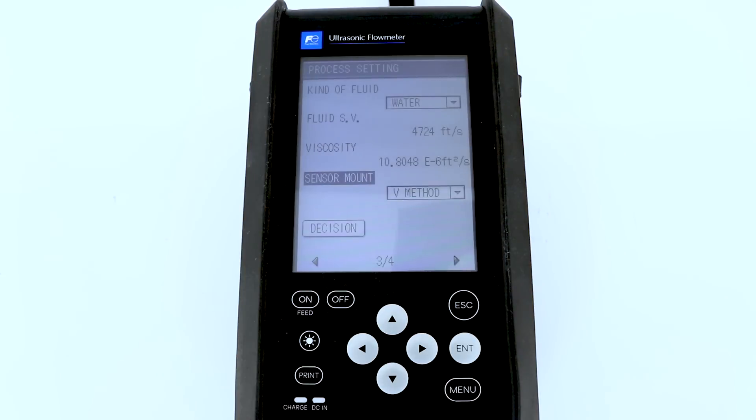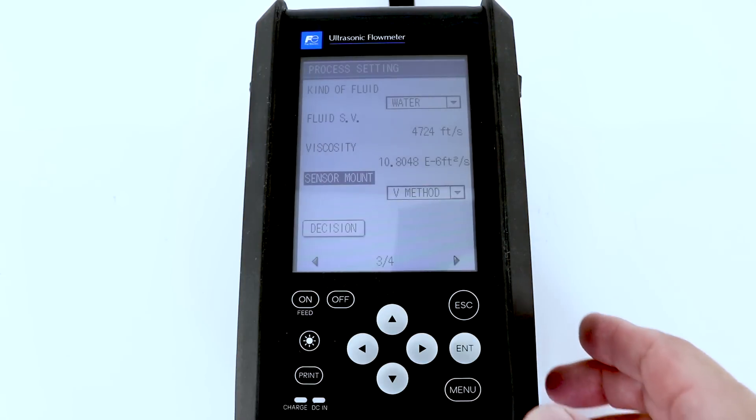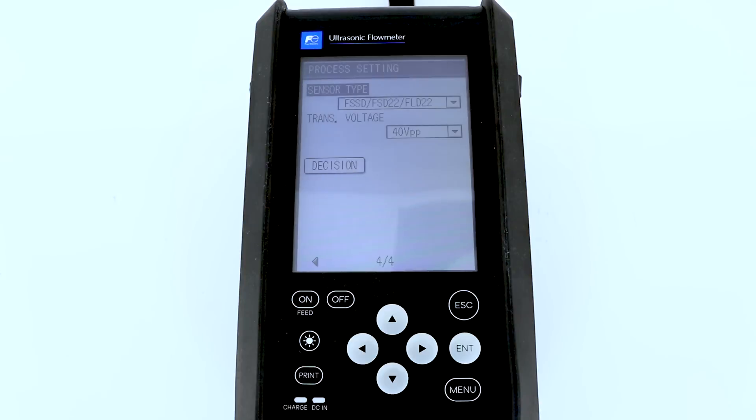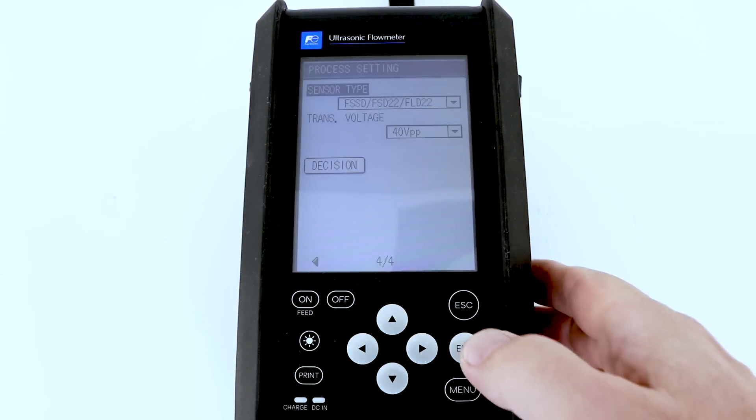The last page is the sensor type. So the transducer will have a part number stamped on the side of the transducer. And in that case, we would just hit enter and then scroll down to the appropriate transducer model number.